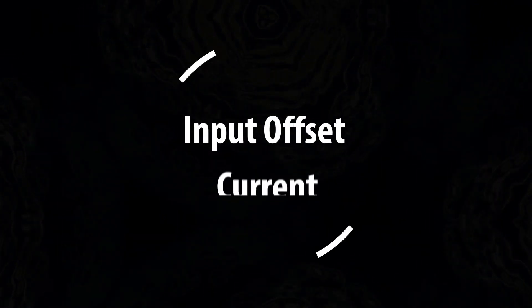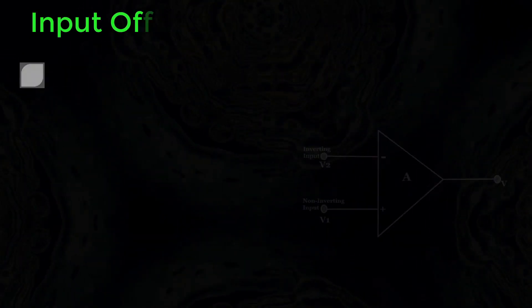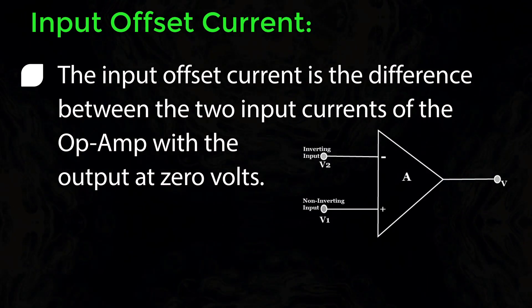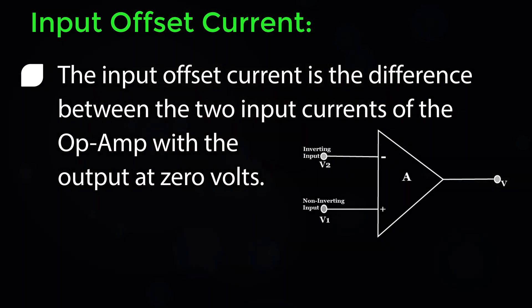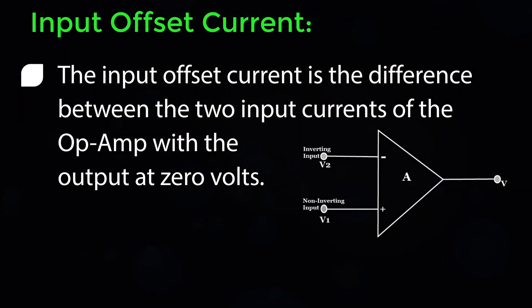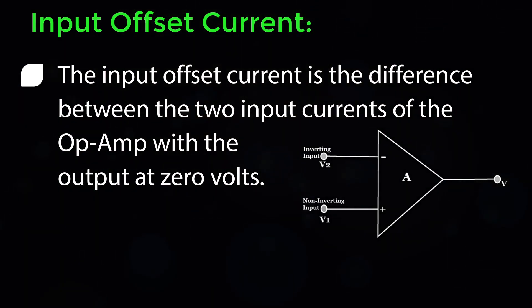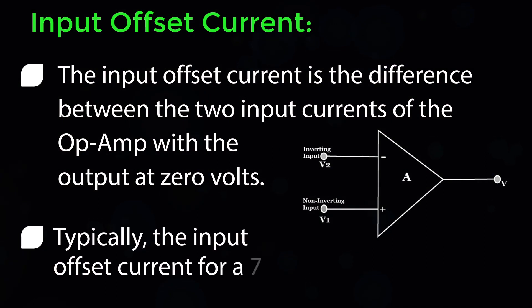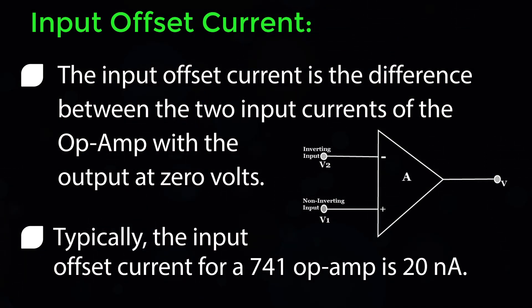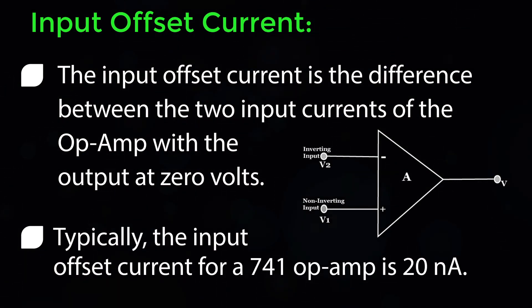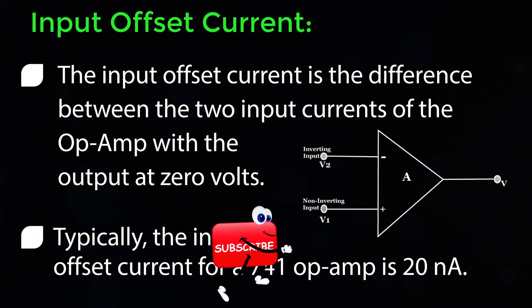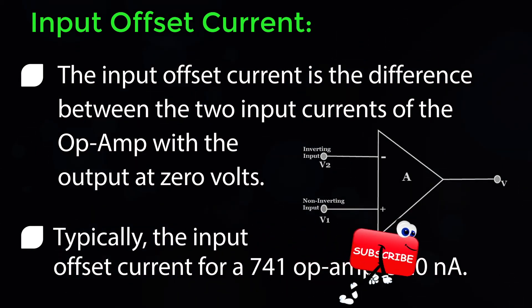Input Offset Current: The input offset current is the difference between the two input currents of the OPAMP with the output at 0 V. Typically, the input offset current for a 741 OPAMP is 20 nA.